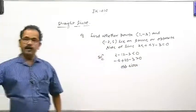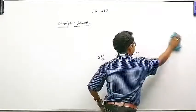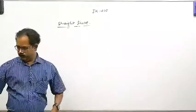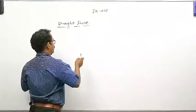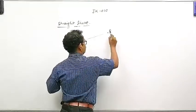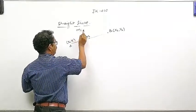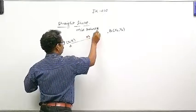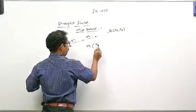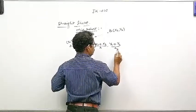अब हम कुछ main points के बारे में बात करते हैं — midpoint, centroid, in-center, circum center, ortho center, etc. Point A is x1, y1 और point B is x2, y2. Midpoint M के लिए, दोनों ratio equal होंगे, so M = (x1 plus x2 upon 2, y1 plus y2 upon 2).